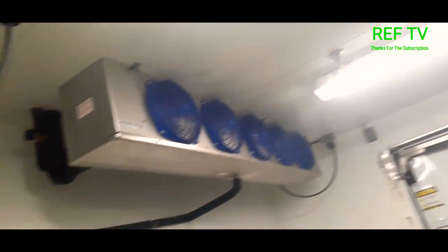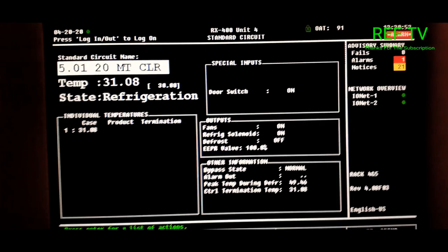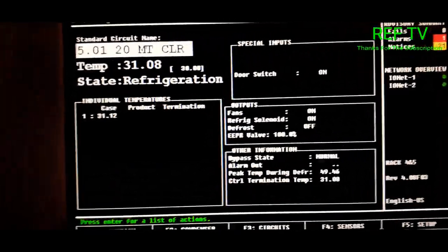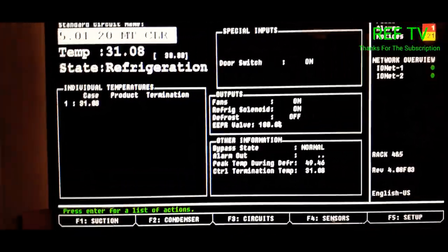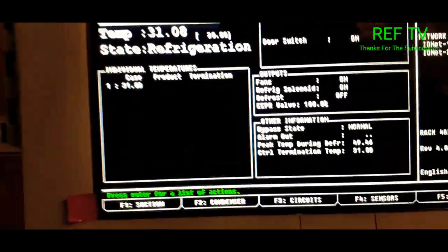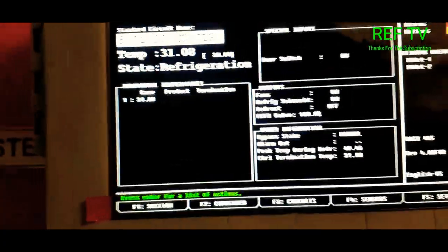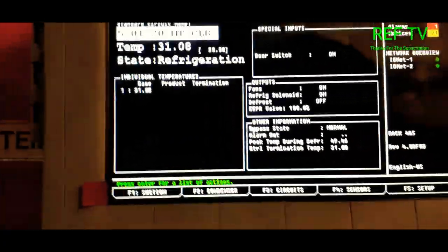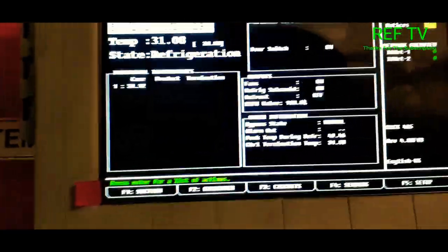All right, so we're back up at our controller and as you can see we had 31 degrees. Our set point is 30, so we are down to temp. I'm gonna head to the supply house and pick up that contactor and I'm gonna replace it, and we're gonna go from there.